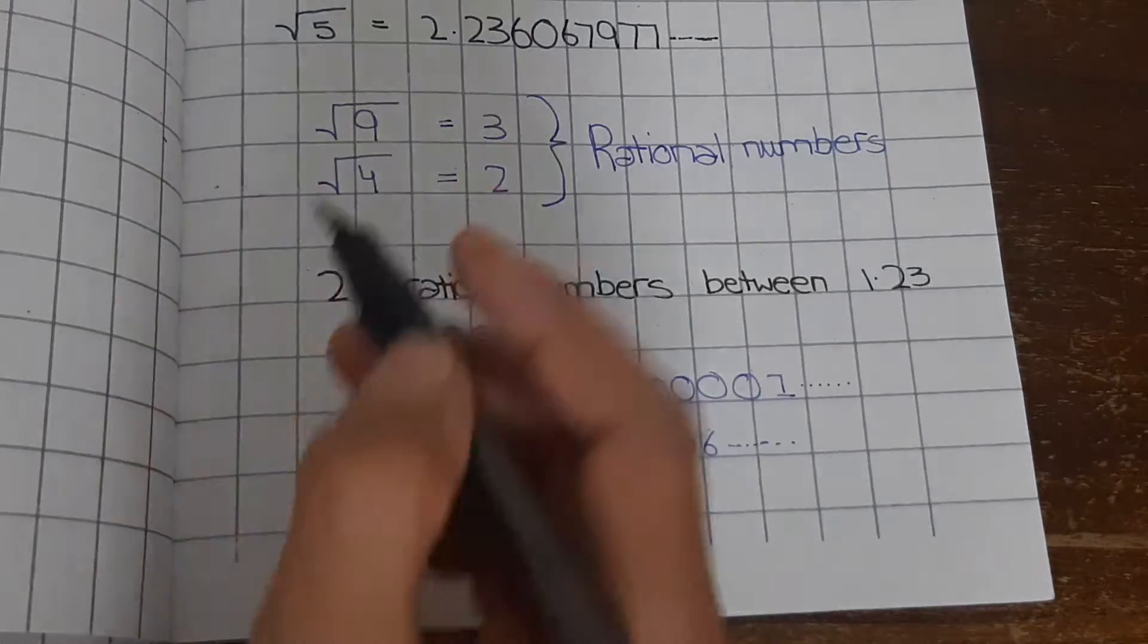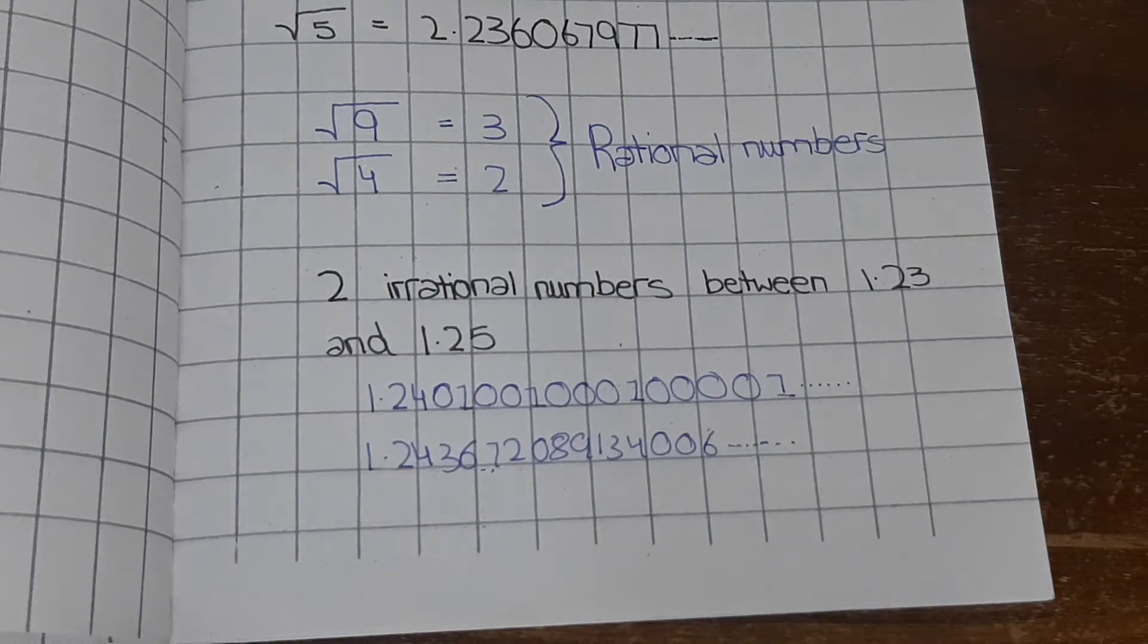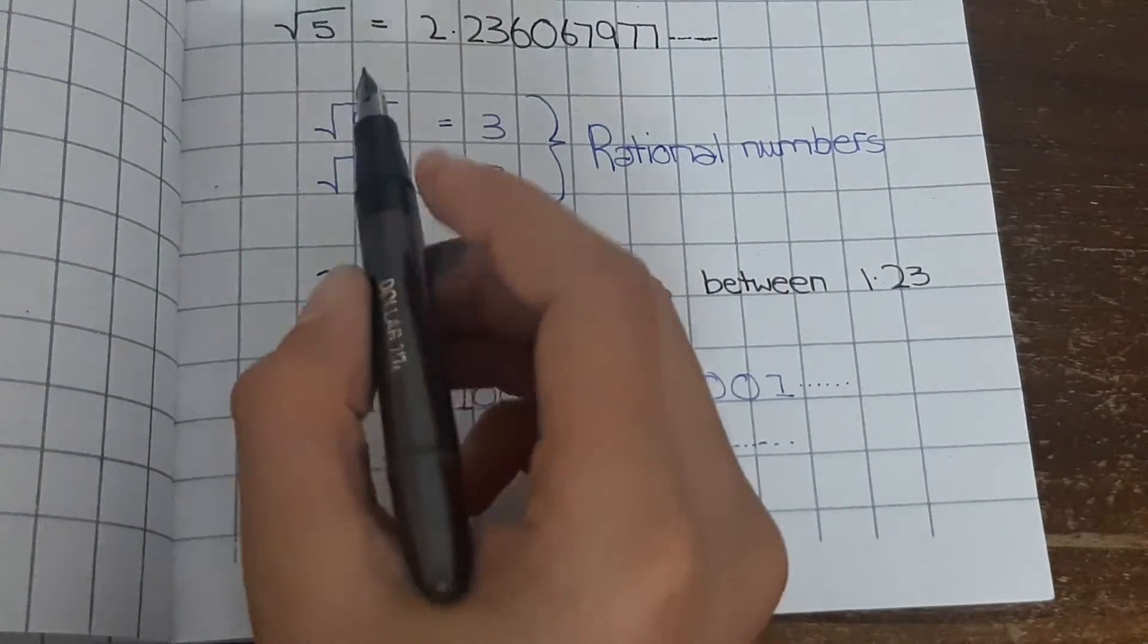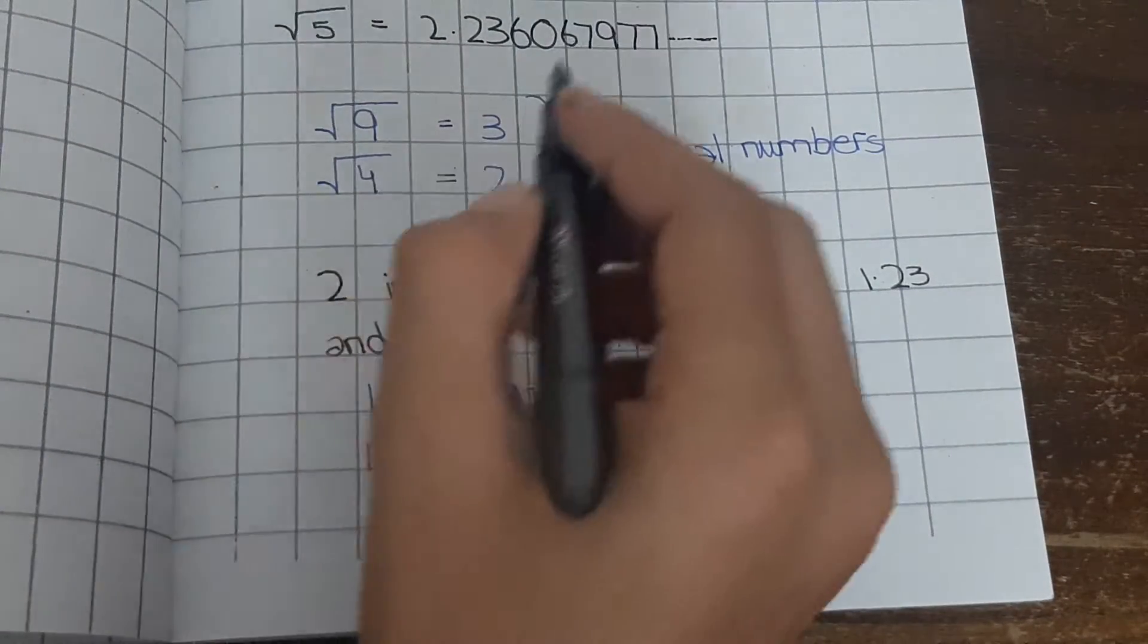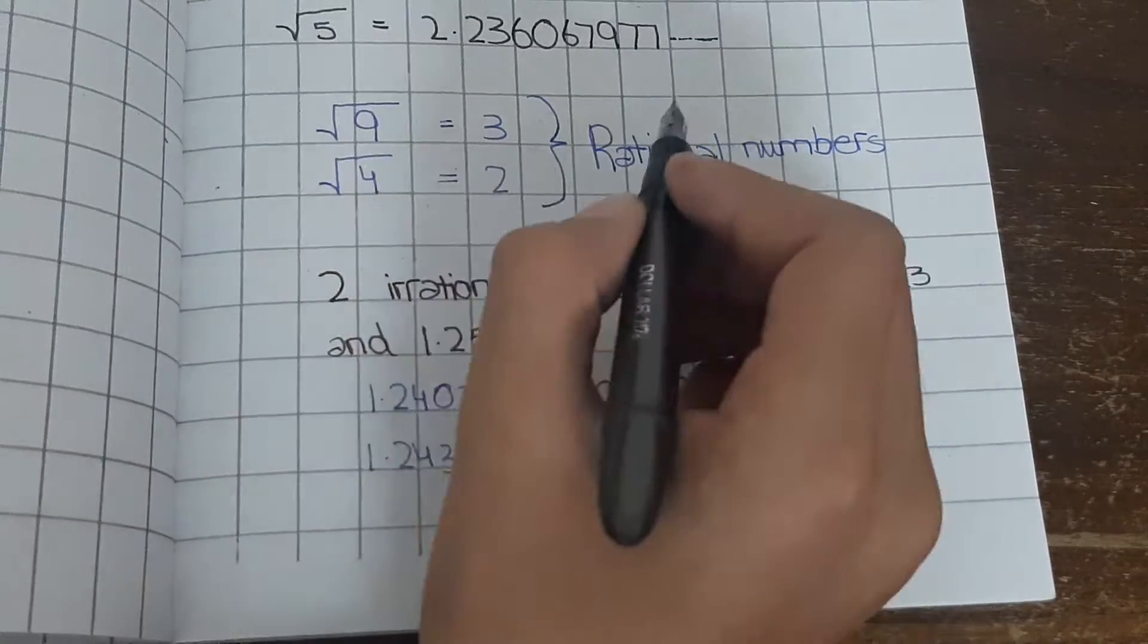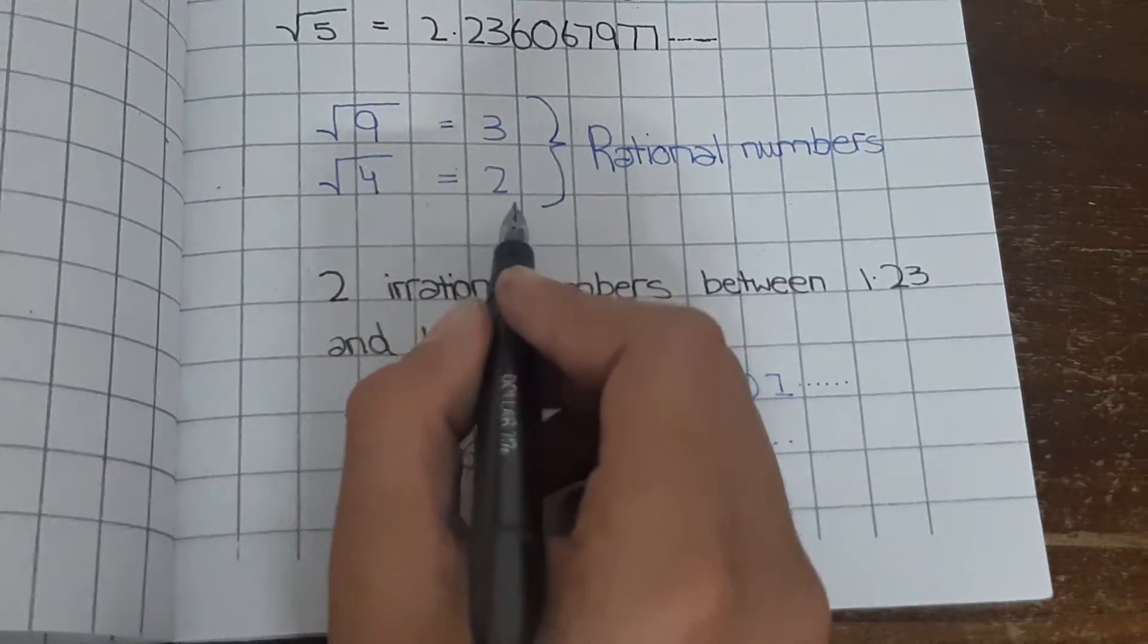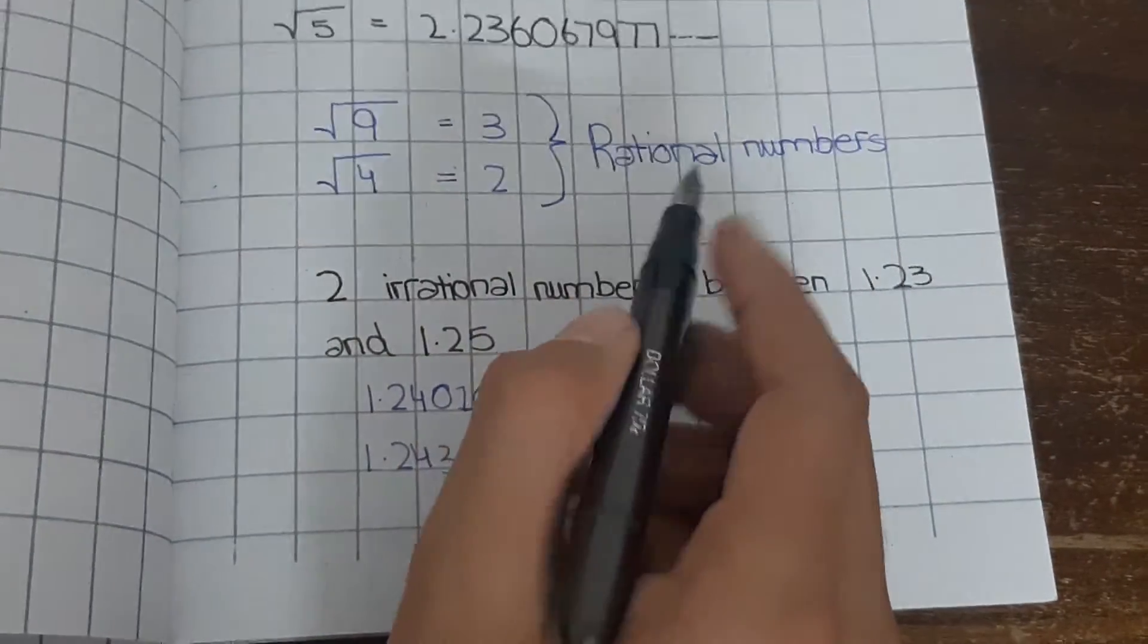Now, what about square root of 9 and 4? Square root of 9 is 3 and square root of 4 is 2. These are rational numbers because they are terminating.